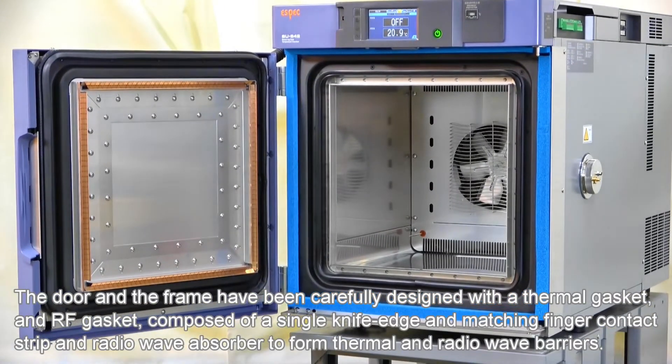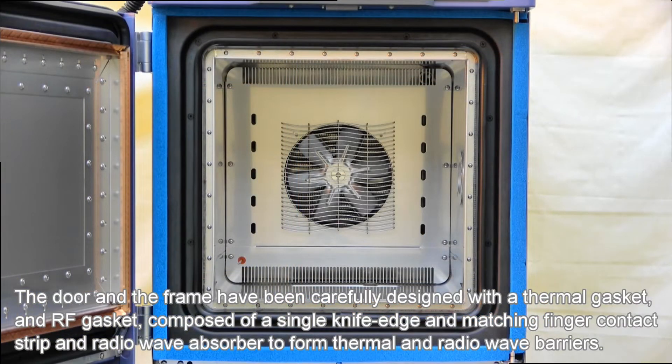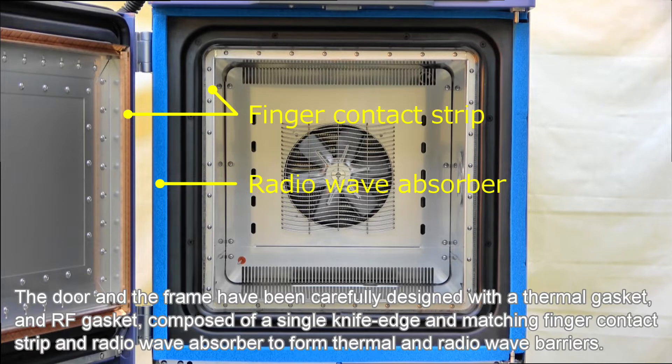The door and the frame have been carefully designed with a thermal gasket, an RF gasket, composed of a single knife edge and matching finger contact strip and radio wave absorber to form thermal and radio wave barriers.